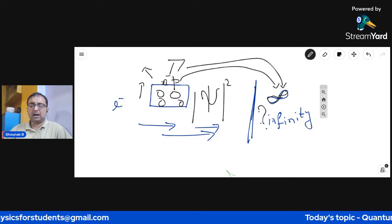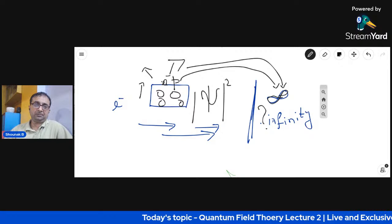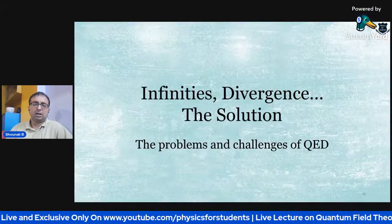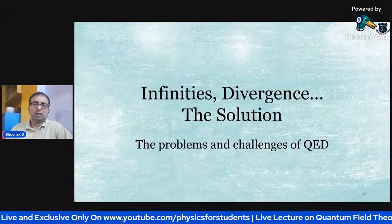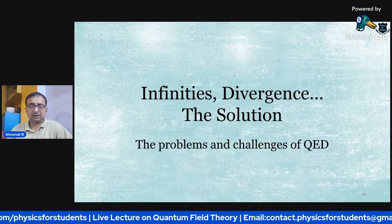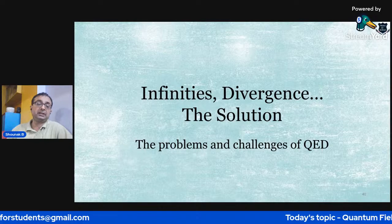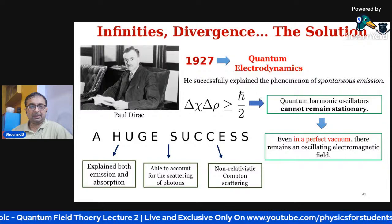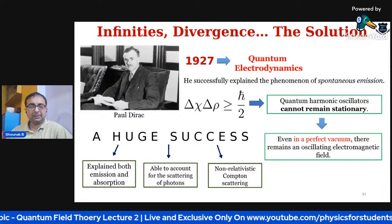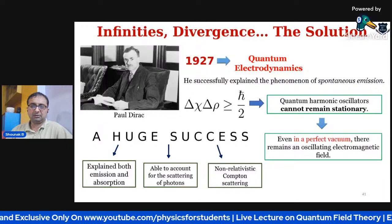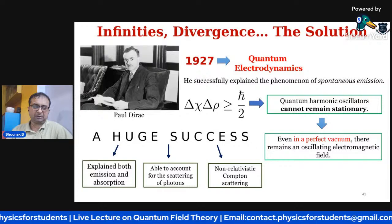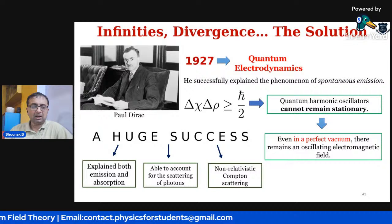If there are enough degrees of freedom, all these electrons and subatomic particles will tend toward infinity, and this infinity is a big problem. How to deal with infinity is another big challenge of quantum field theory. The infinities and divergences — most importantly, if there is divergence, that could be a serious problem. Around 1927, quantum electrodynamics was framed by Paul Dirac, who successfully explained the phenomenon of spontaneous emission.